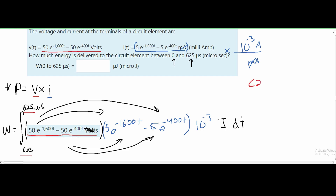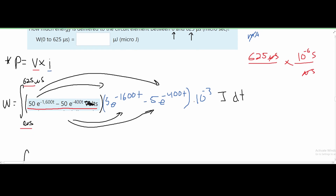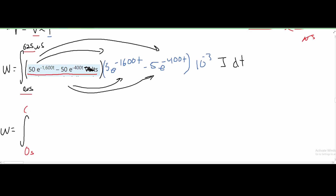We convert 625 microseconds: one microsecond equals 10 to the negative 6, so we put micro on the bottom and 10 to the negative 6 on top, then attach seconds. This leaves us with 625 times 10 to the negative 6 seconds as our upper limit for the integral.